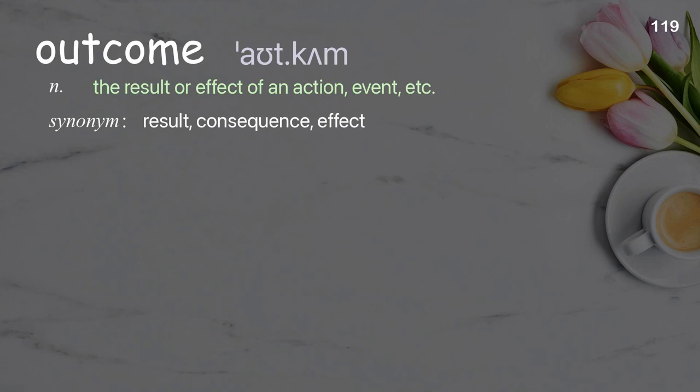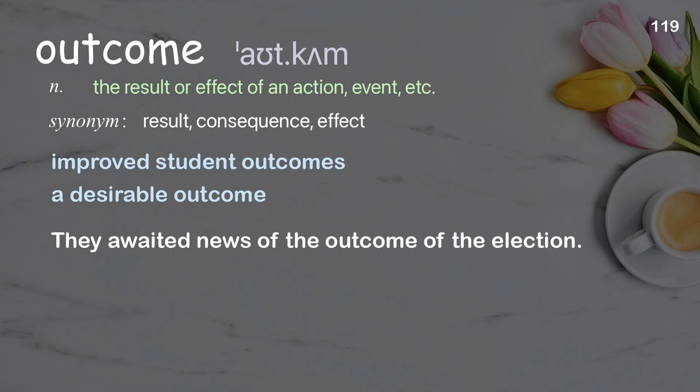Outcome: the result or effect of an action, event, etc. Examples: improved student outcomes, a desirable outcome. They awaited news of the outcome of the election.